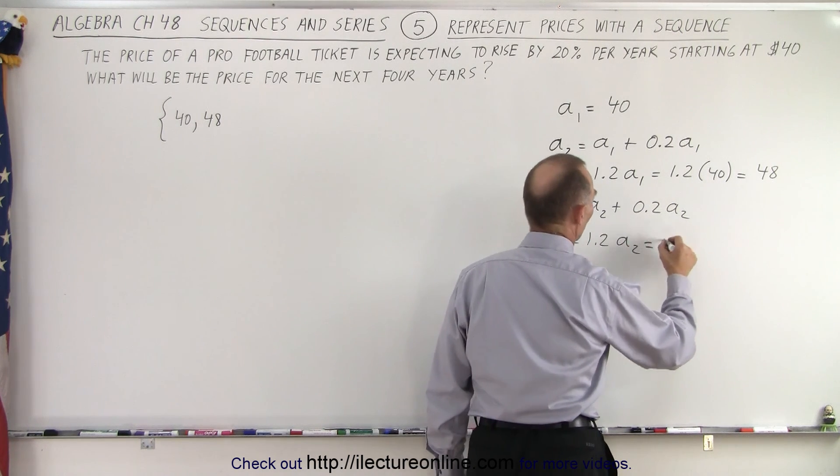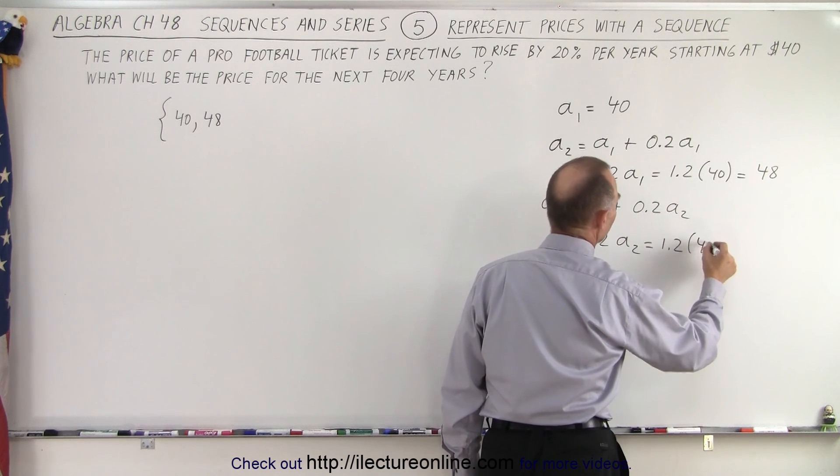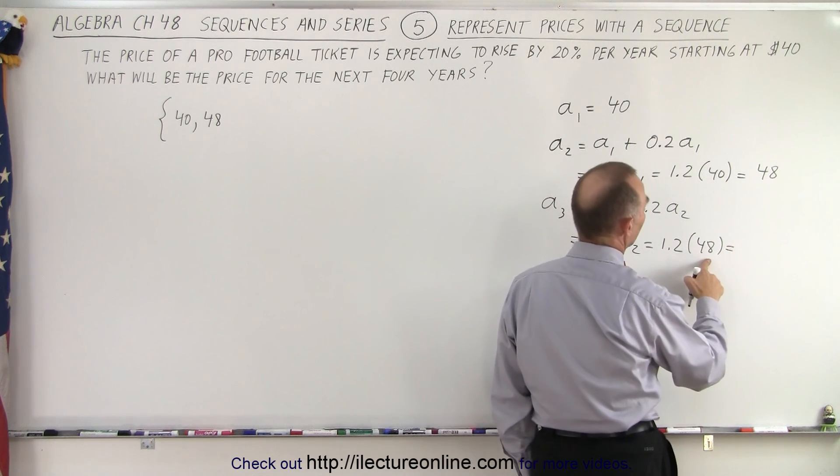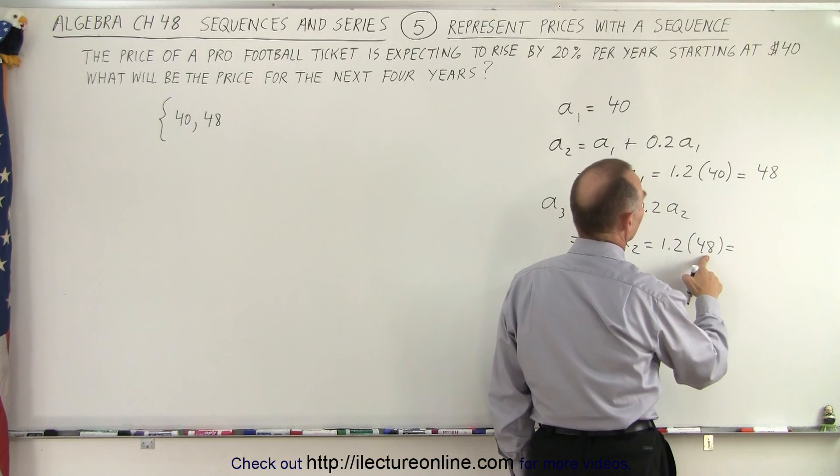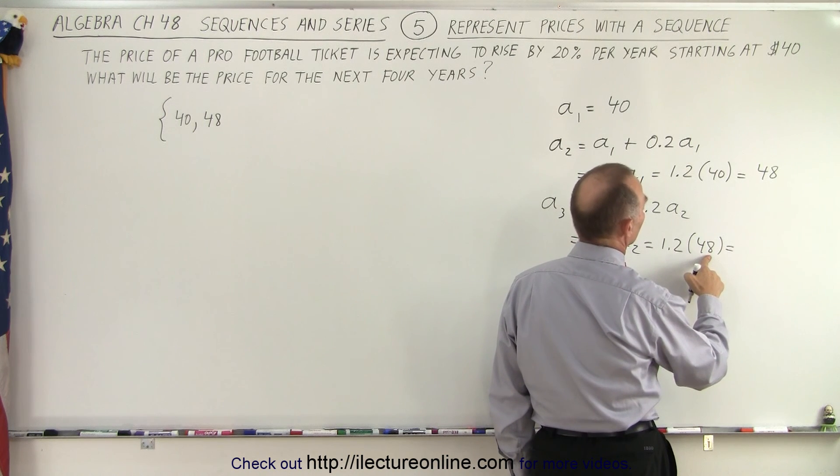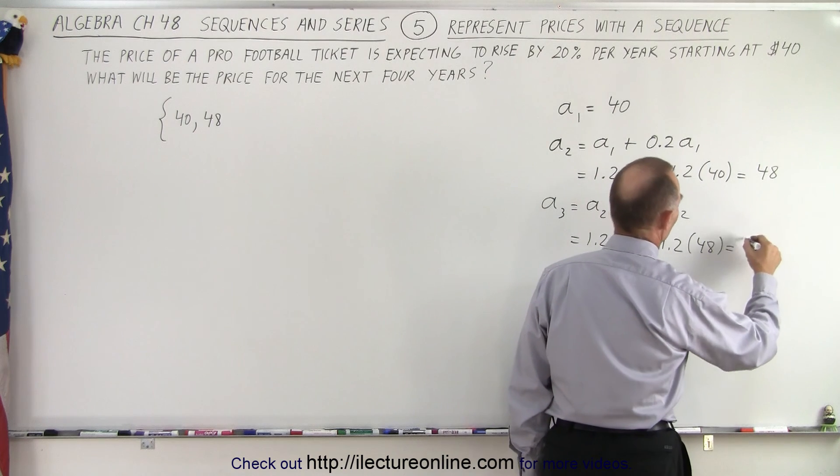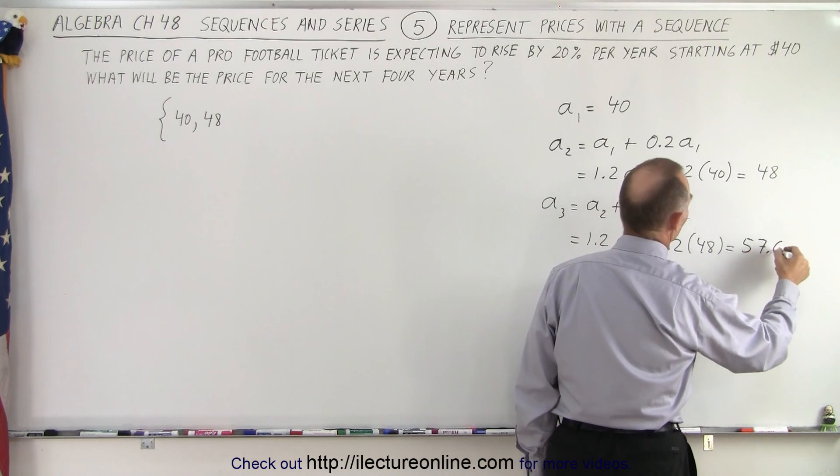And so this will be equal to 1.2 times 48, which will be... that's 48, that would be 96. That's 58 minus 6, that's 57.60.